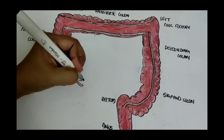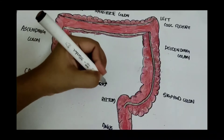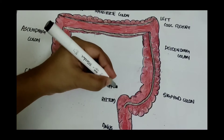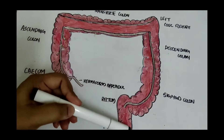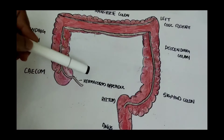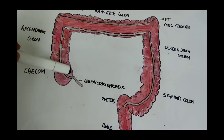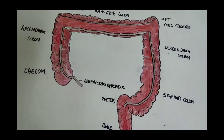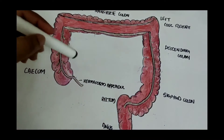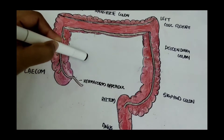In the angle between the terminal part of the ileum and the cecum, there is a narrow diverticulum called the vermiform appendix. The large intestine extends from the ileocecal junction — the ileum being the last part of the small intestine and the cecum being the first part of the large intestine — to the anus. This large intestine is about 1.5 meters long.